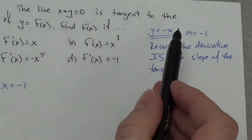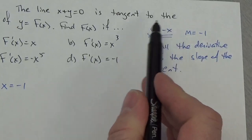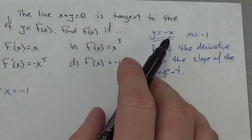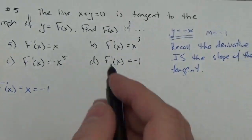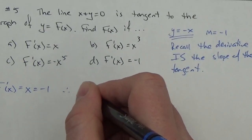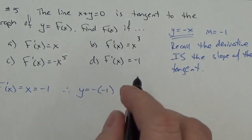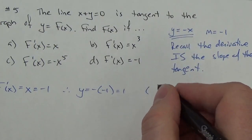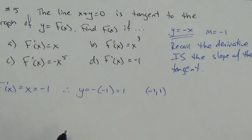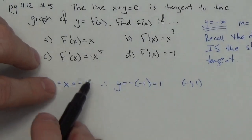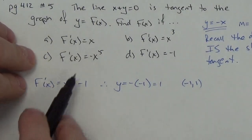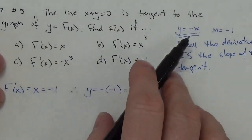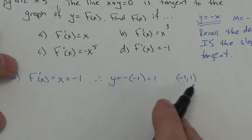If that's true, bearing in mind that this is the line tangent to the curve at that point, that means this line intersects the function at that point. So if x equals negative one, the y-coordinate I'm looking for is going to be the negative of negative one, or positive one. The point of intersection is the point negative one, one. I got the x by setting the slope equal to the derivative of the function, and then I get the y-coordinate from the equation of the tangent. So now I've got a boundary condition.